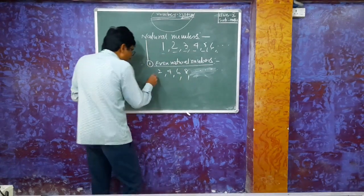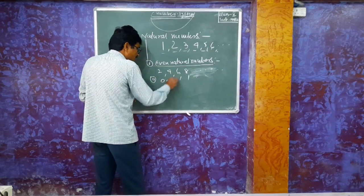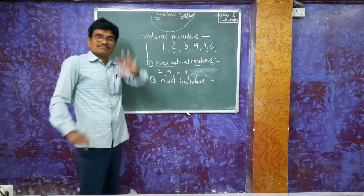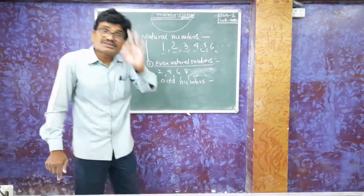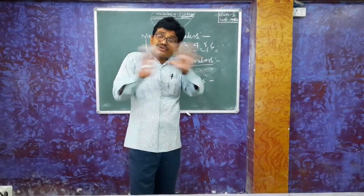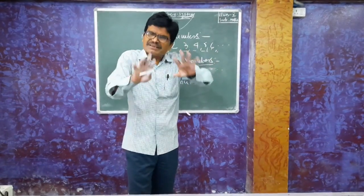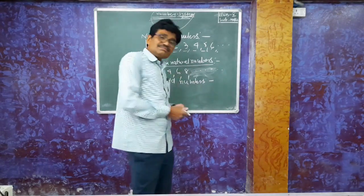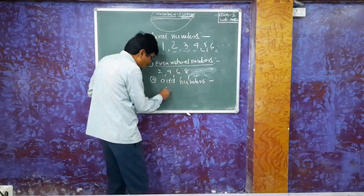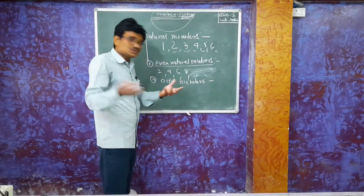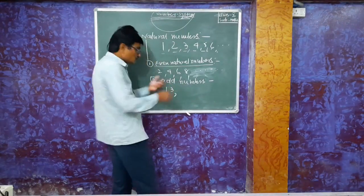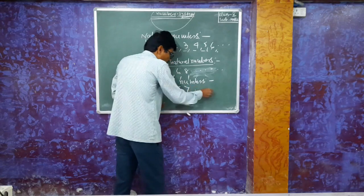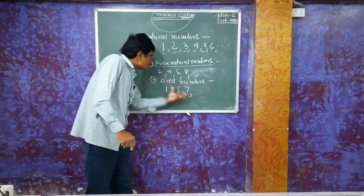The second group is odd numbers. Those natural numbers which are not completely divided by 2 are known as odd numbers. For example, 1 is not completely divided by 2, 3 is not completely divided by 2, 5 is not completely divided by 2, 7 is not completely divided by 2, and so on. So these natural numbers are known as odd numbers.